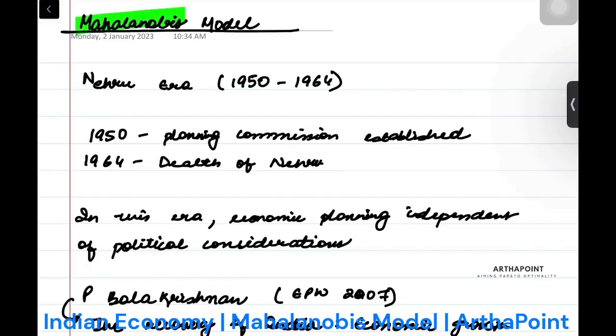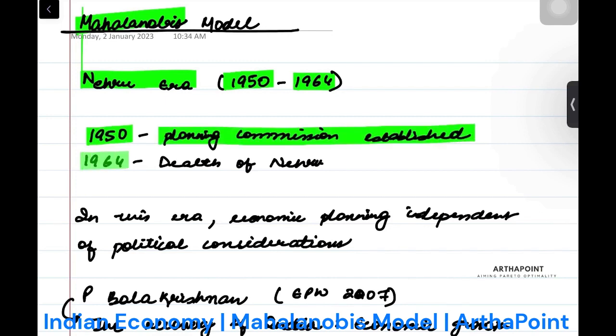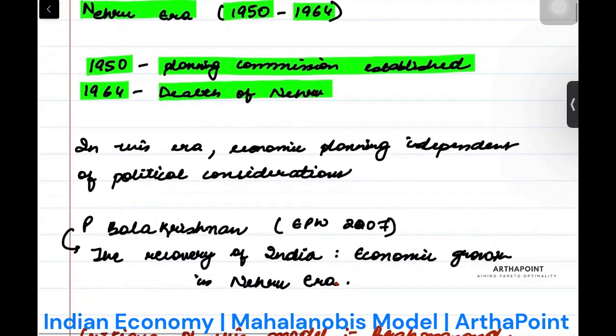Mahalanobis Model. So the Nehru era, this was a period from 1950 to 1964. It was in 1950 that the planning commission was established and in 1964 that was the death of Jawaharlal Nehru. When we talk about this era, we see that economic planning was independent of political concentration.